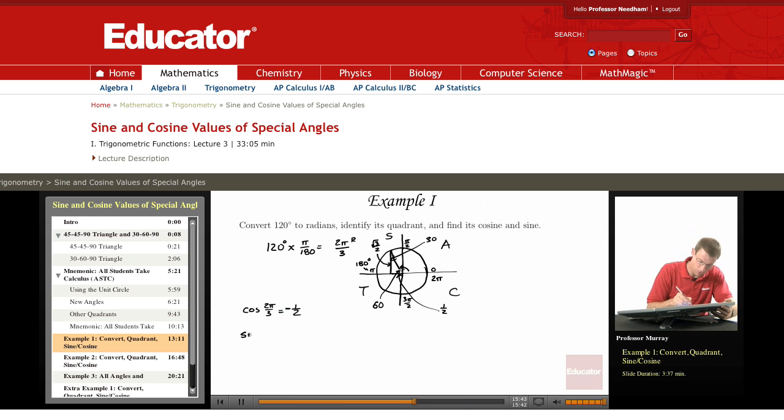The sine of 2π/3, the y value is √3/2. In the second quadrant, the sine is positive, so that's positive. So our cosine and sine are -1/2 and √3/2.